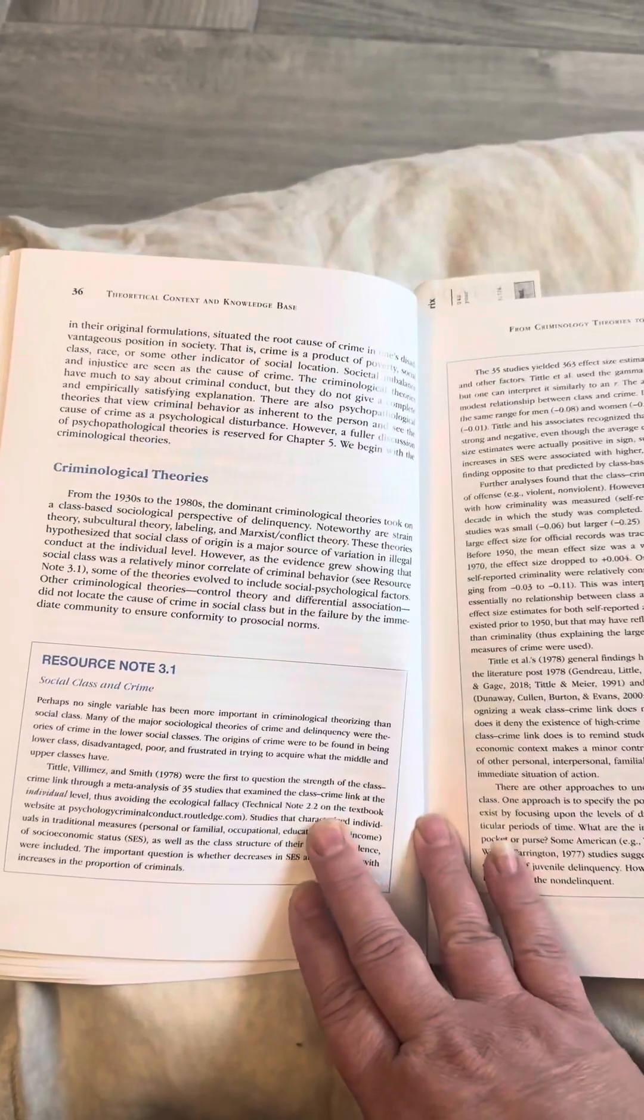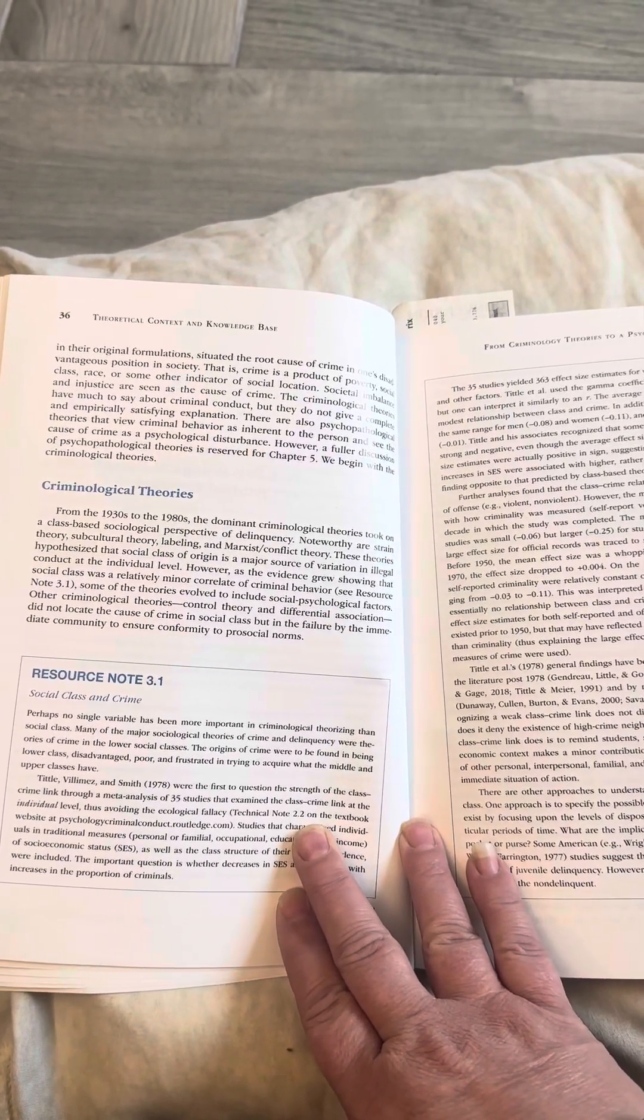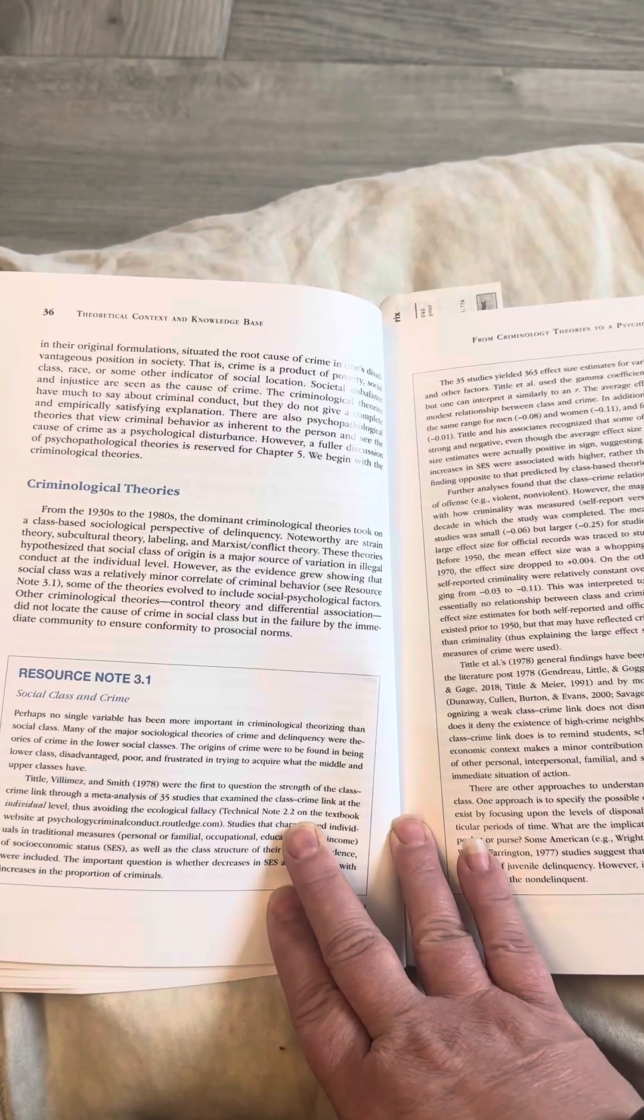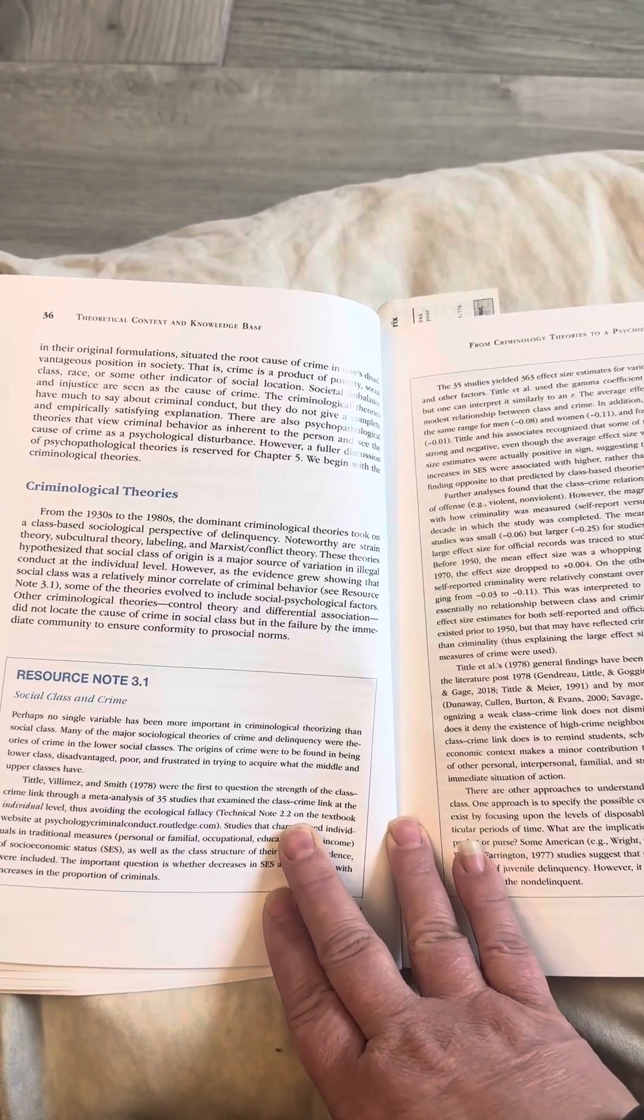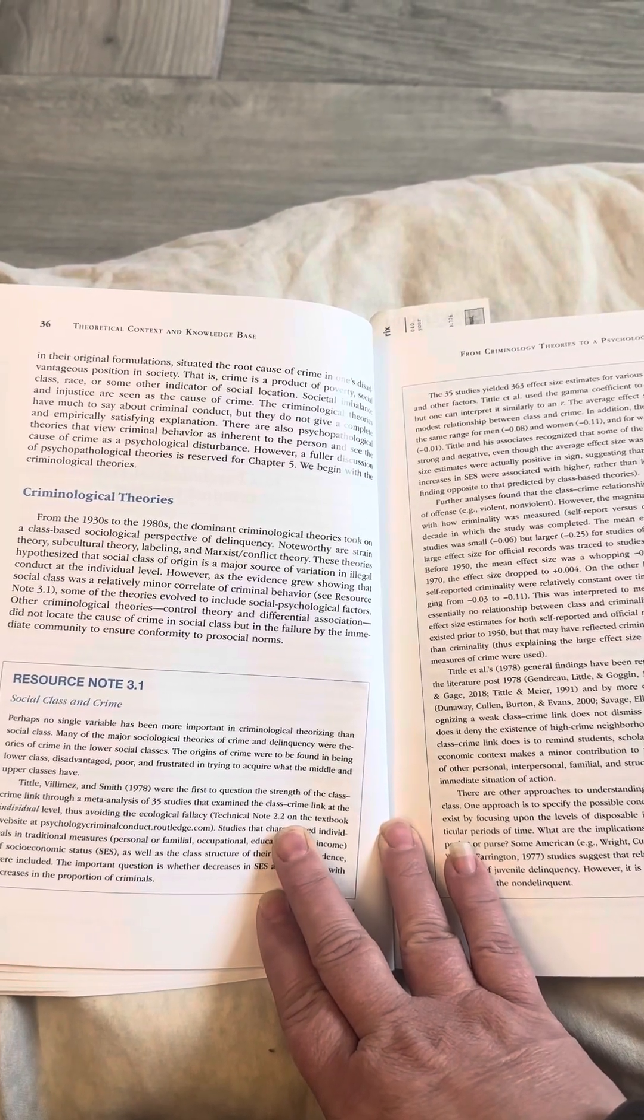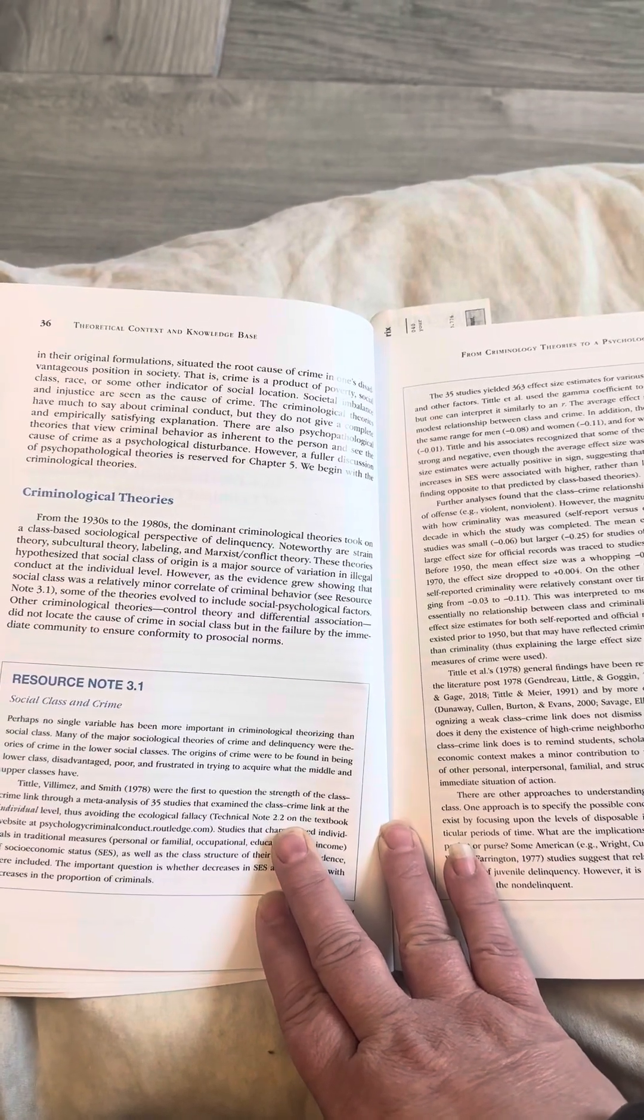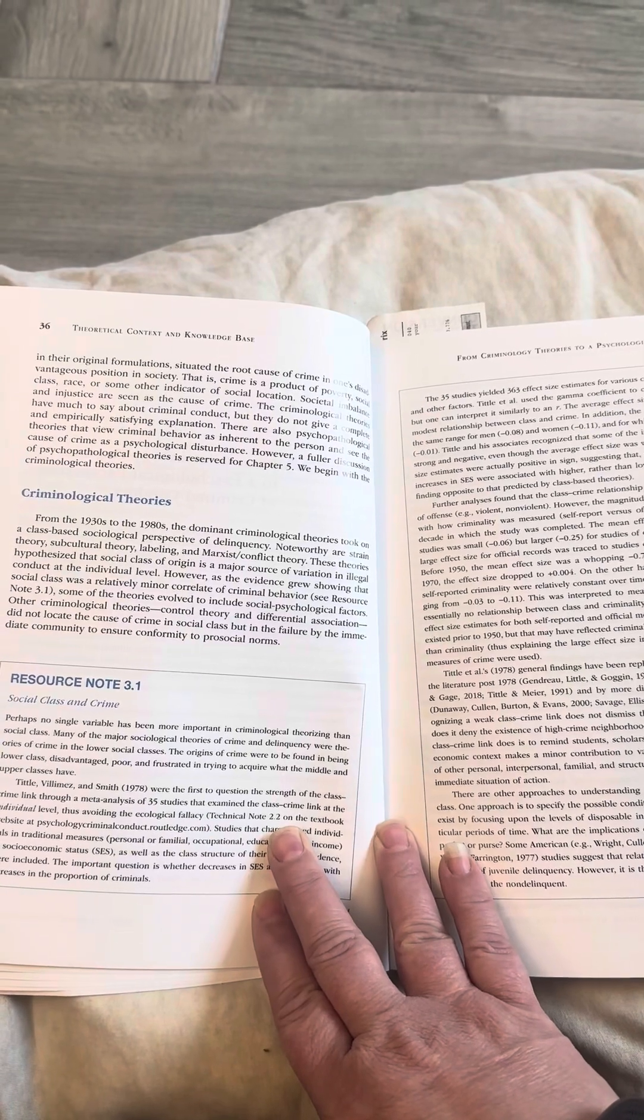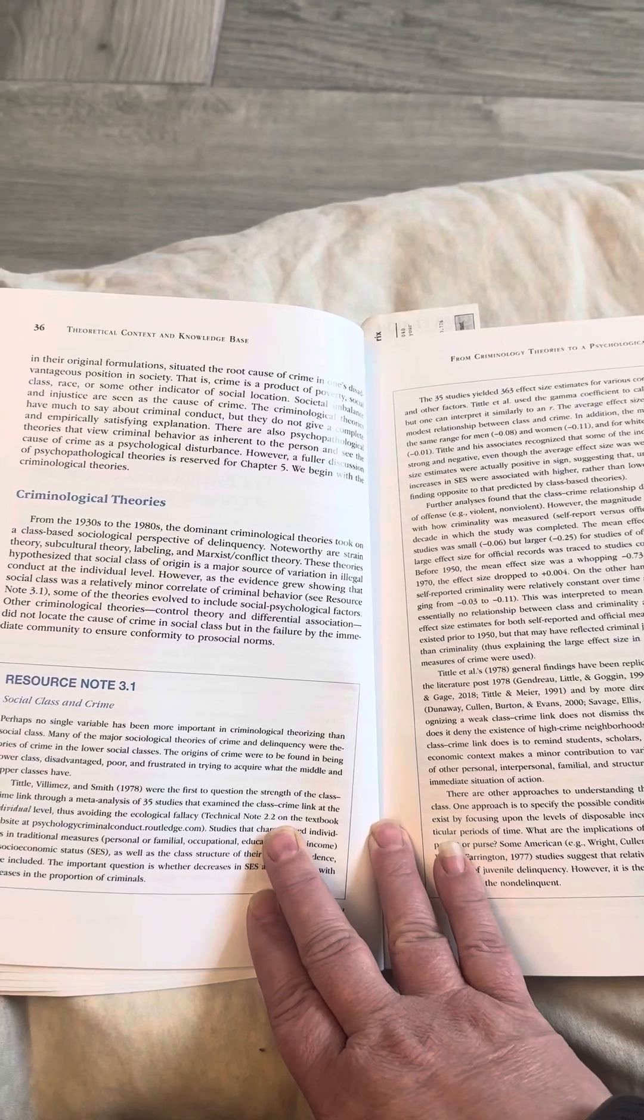Criminological theories. From the 1930s to the 1980s, the dominant criminological theories took on a class-based sociological perspective to delinquency. Noteworthy are strain theory, subcultural theory, labeling, and Marxist conflict theory. These theories hypothesize that social class of origin is a major source of variation in illegal conduct at the individual level. However, as the evidence grew, showing that social class was a relatively minor correlate of criminal behavior, see Resource Note 3.1.